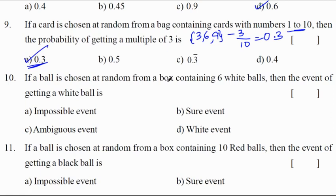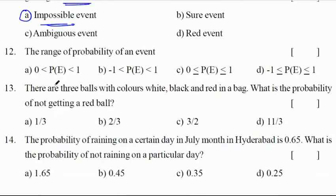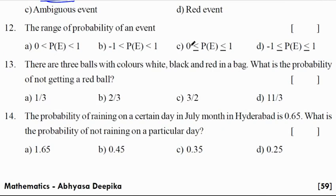If a ball is chosen at random from a box containing 6 white, then the probability of getting a white ball. So box has 6 white balls, what is the probability of getting a white ball? White ball is compulsory, probability will be 1 and it is a sure event. If a ball is chosen at random from a bag containing 10 red balls, then the probability of getting a black ball. So we call it as impossible event which is 0. The range of probability of an event will be option C, 0 is less than or equal to P less than or equal to 1.